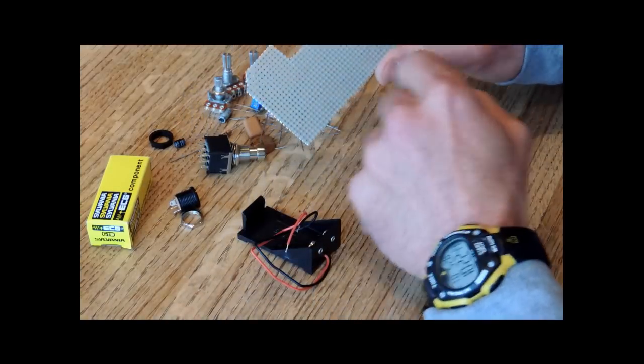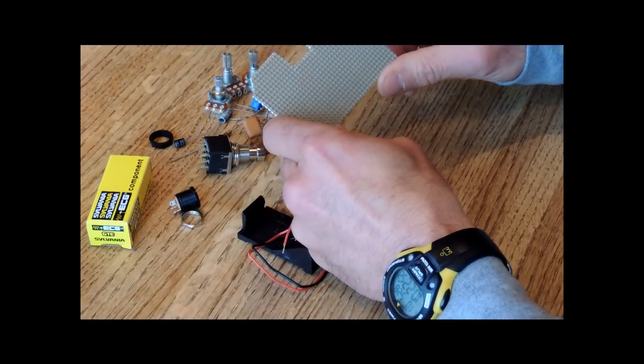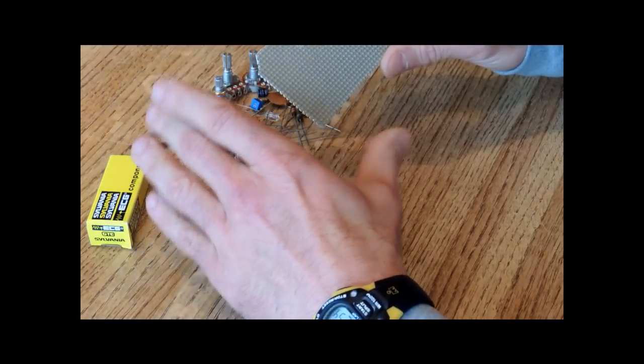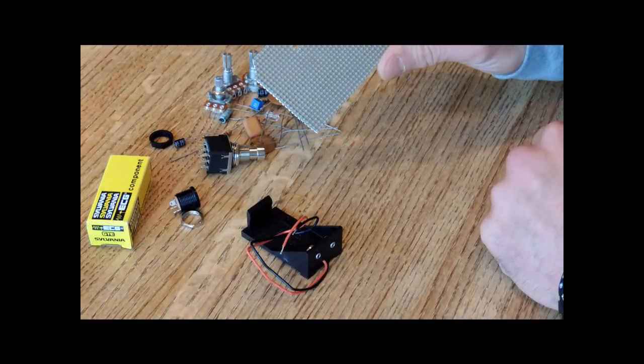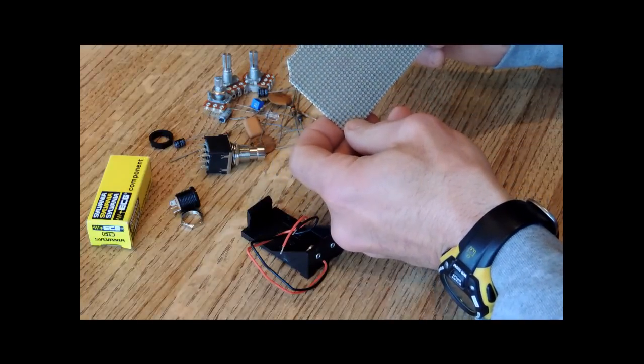So here I start with a piece of pad-per-hole perforated board. You can get large sheets of these, and I use a pair of tin snips to cut this out. You can see that I've notched it in a certain way.